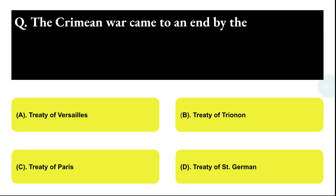Next question: the First World War came to an end by which treaty? Option A: Treaty of Versailles, Option B: Treaty of Trianon, Option C: Treaty of Paris, Option D: Treaty of Saint-Germain. The correct answer is option C, Treaty of Paris.